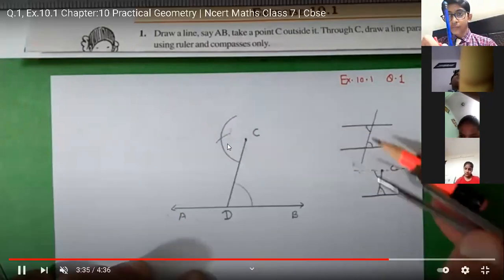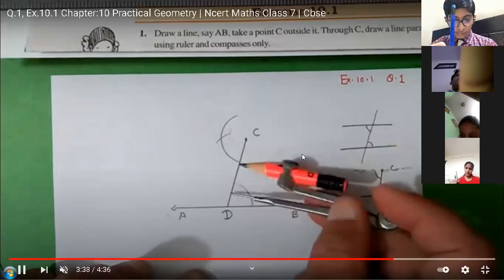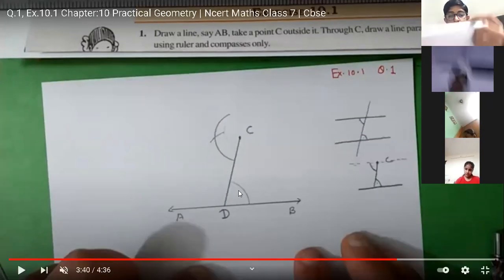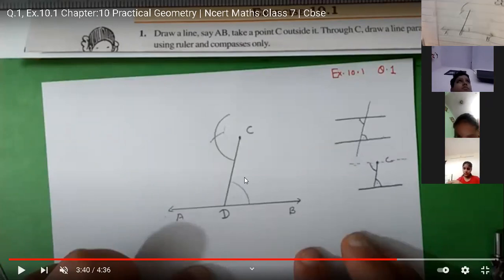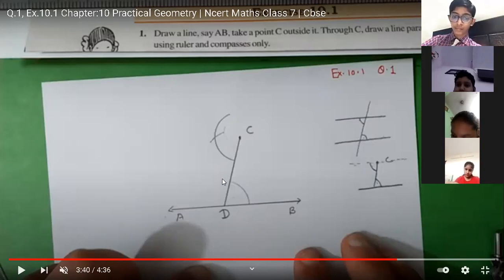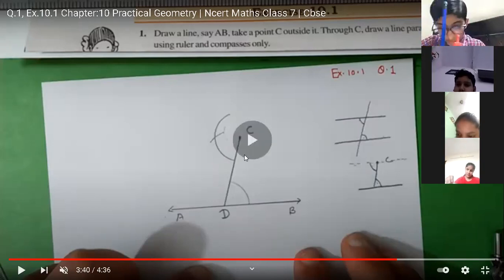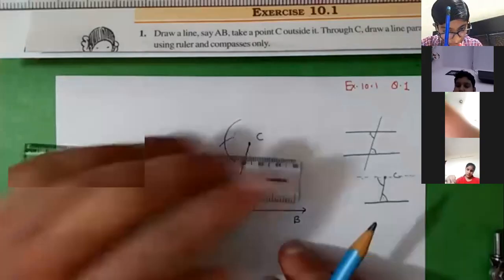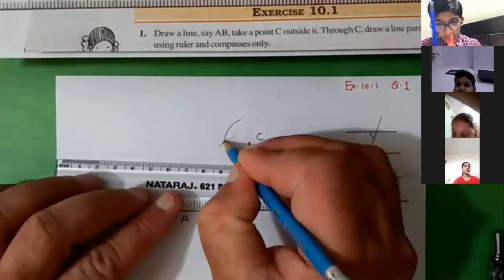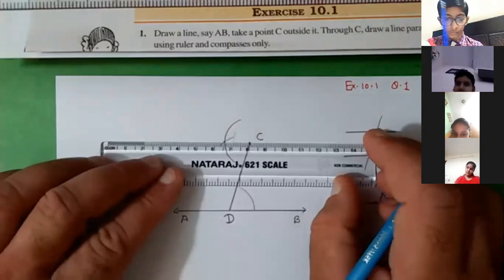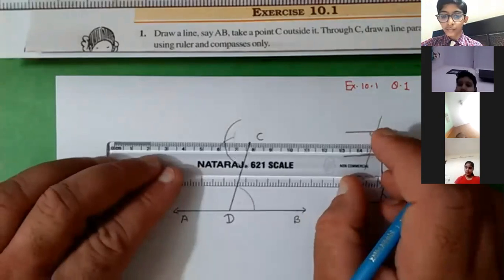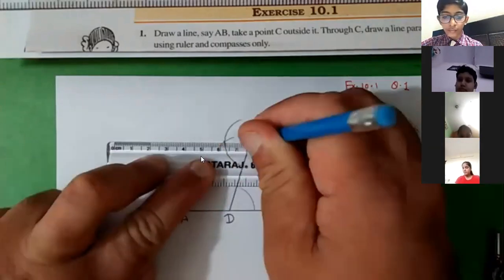Draw an arc of the same measurement. Now listen carefully — these two points where you have taken from D, with the same measurement you have to cut an arc from point C. Now take a scale and draw a line passing through these two points — the cut point and point C. Put a scale on it and draw the line.